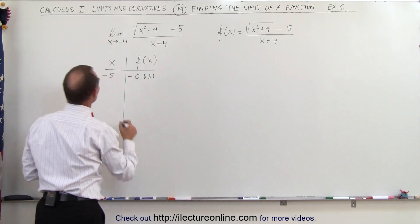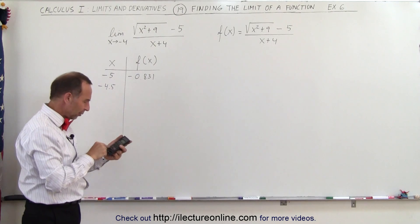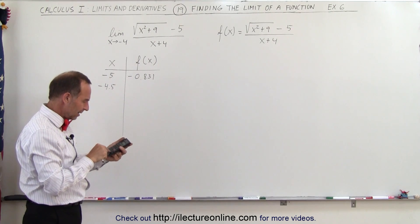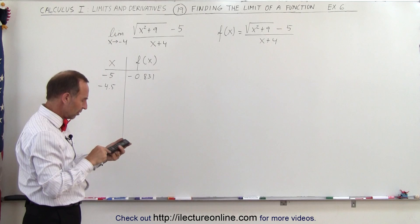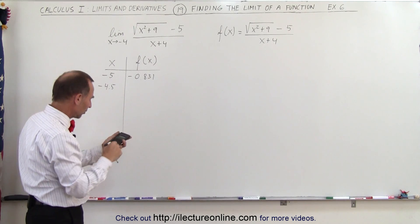All right, let's try minus 4.5. So 4.5 squared plus 9, take the square root, subtract 5 from that, and then divide by negative 4.5 plus 4, which is divide by negative 0.5,